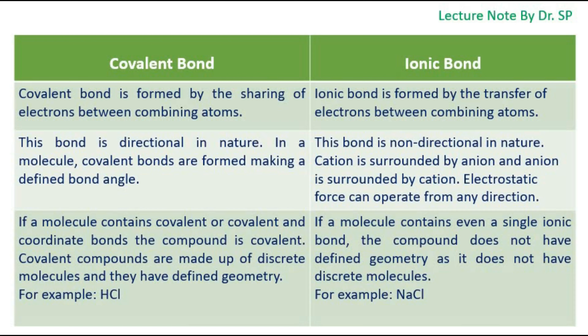Today, I will discuss covalent bond and ionic bond. Covalent bond is formed by the sharing of electrons between combining atoms. An ionic bond is formed by the transfer of electrons between combining atoms.